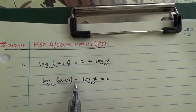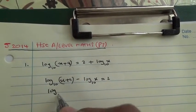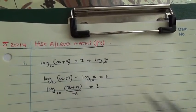So when we have minus, we go for division. Therefore we're going to say log₁₀((x+9)/x) = 2.